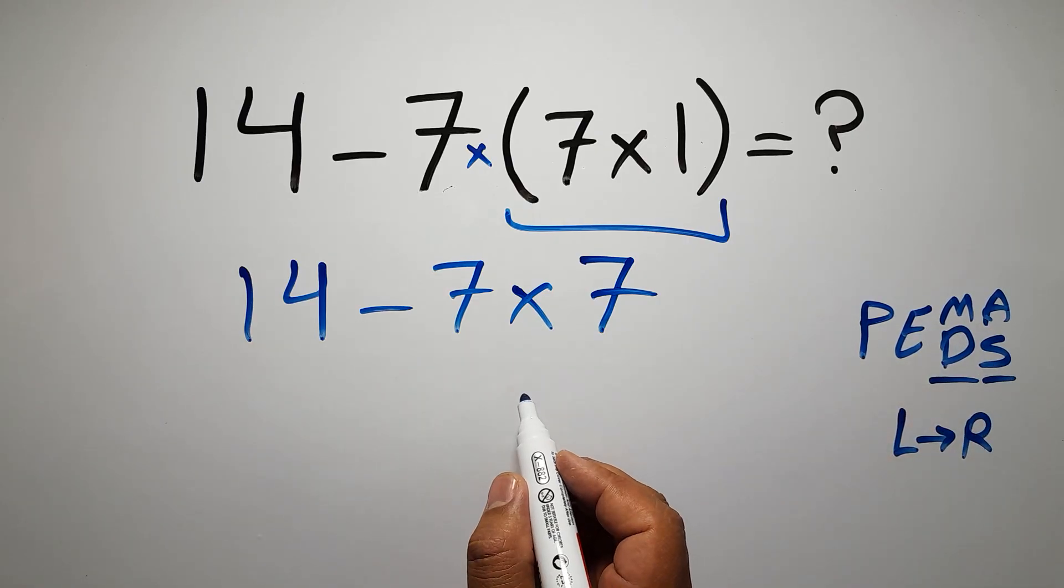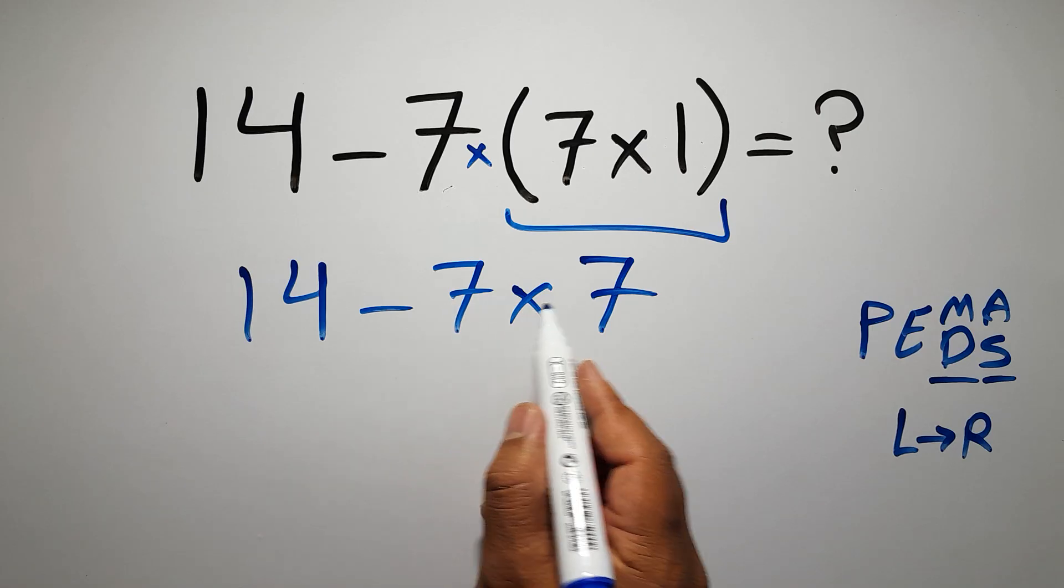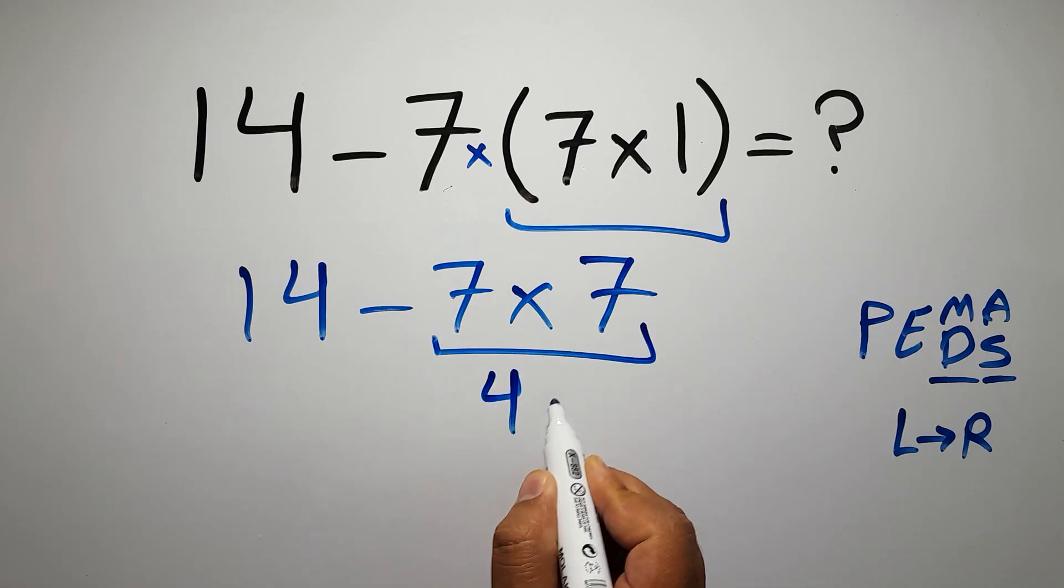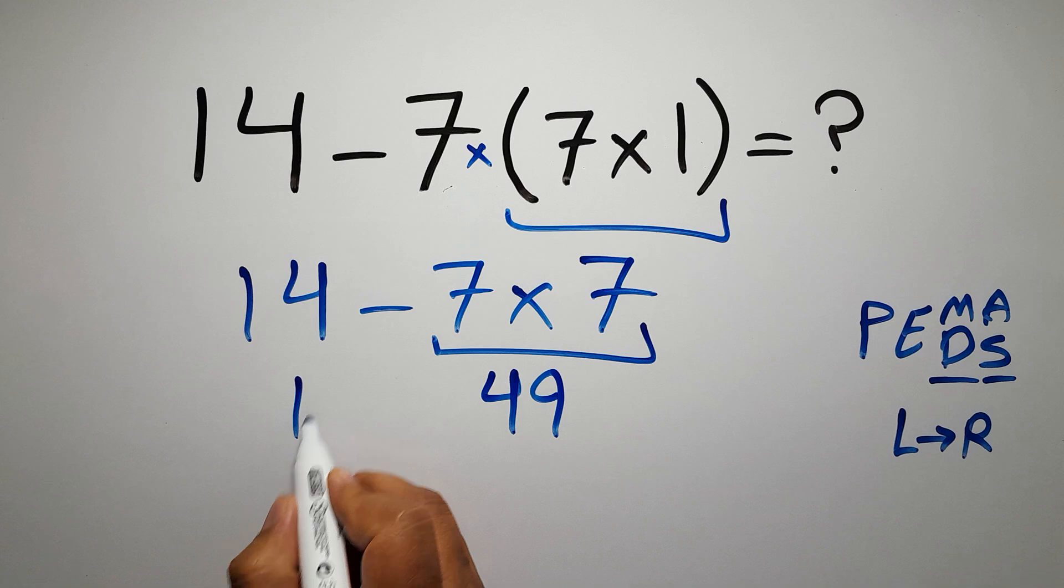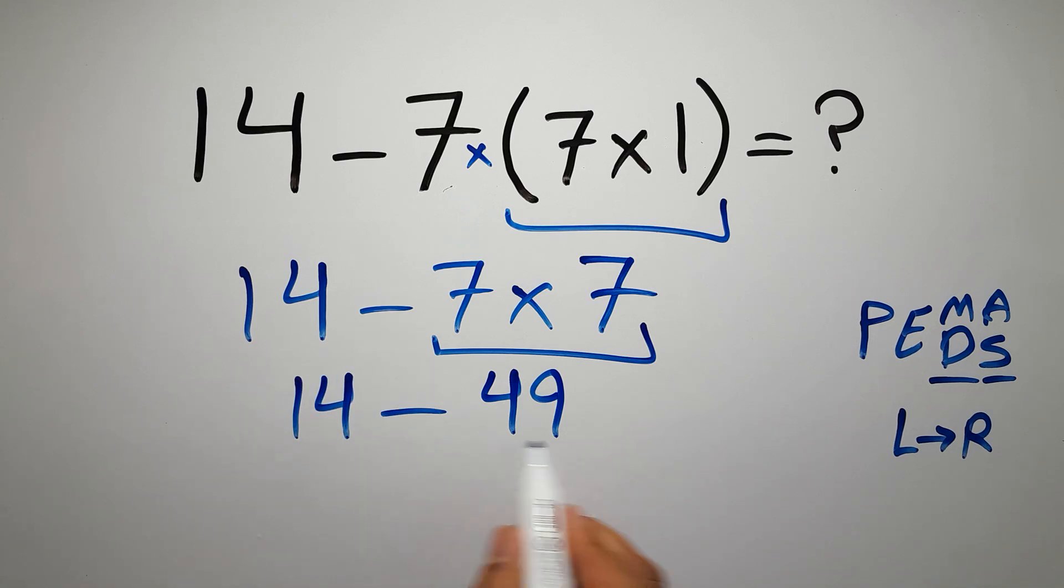So 7 times 7 gives us 49, and 14 minus 49 is just negative 35. Negative 35, and this is our final answer to this problem.